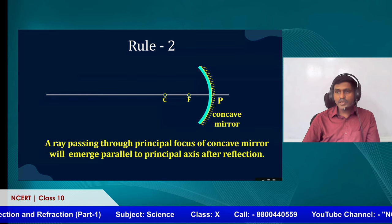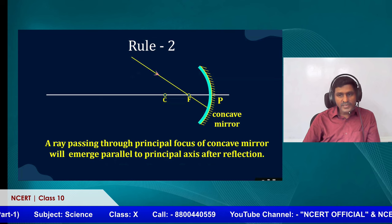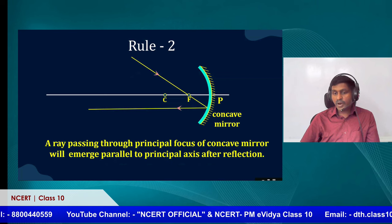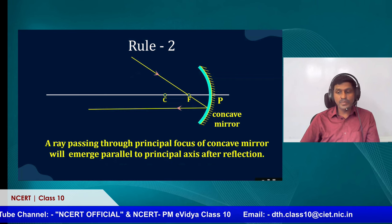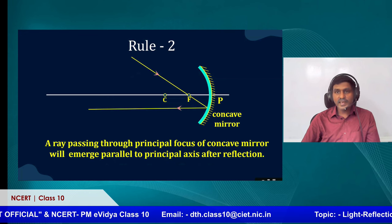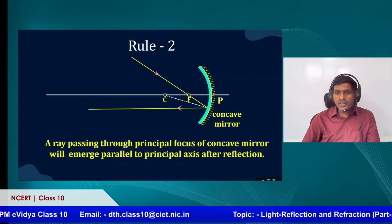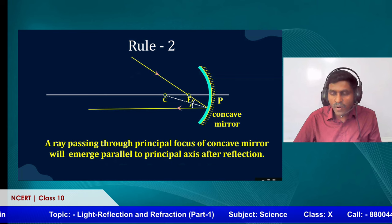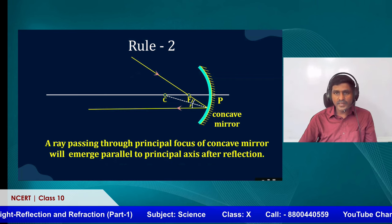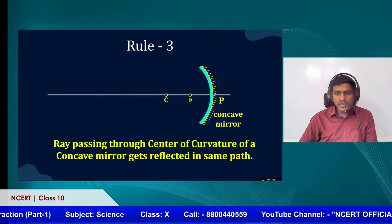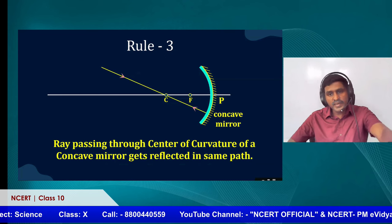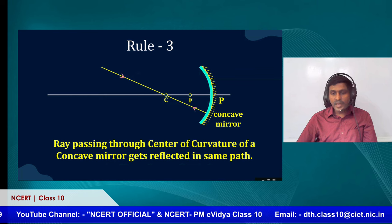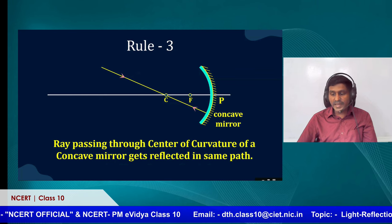Rule number 2 is the reverse of rule number 1: if a ray of light is passing through the principal focus F, it will emerge as a ray parallel to the principal axis after reflection. Rule number 3: if a ray is passing through the center of curvature, the reflected ray also passes through the same path — meaning the ray is reflected back in the same direction. While drawing a ray diagram, when a ray passes through the center of curvature, it should return back in the same path.